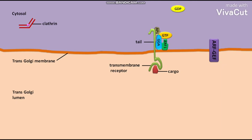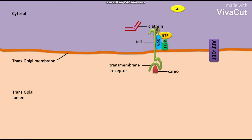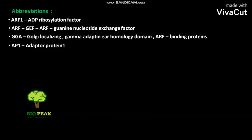The cytosolic clathrin then binds to the AP1, and the clathrin coat assembles on the AP1.